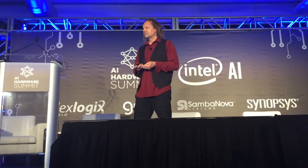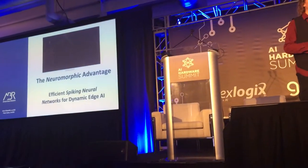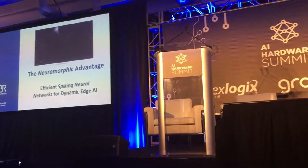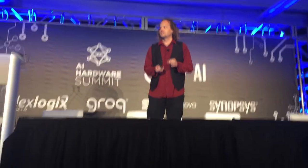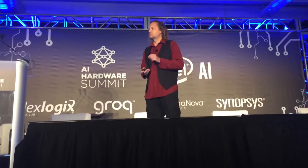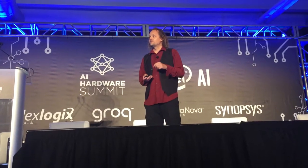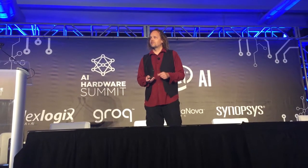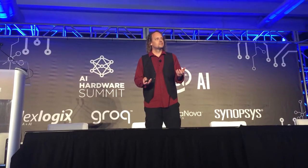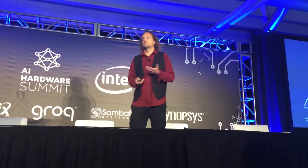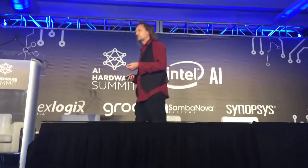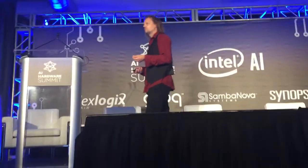Our devices can do many of these things, and they're getting better. But there is a fundamental difference between how our devices compute and how brains compute. Brains use spikes, and our devices don't — well, most of our devices don't. There's this kind of chip called a neuromorphic chip, which uses spikes to compute. What I'm going to be talking about today is how we can get advantages out of using those spikes.